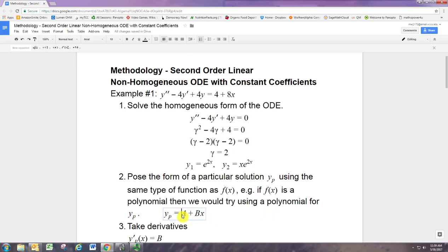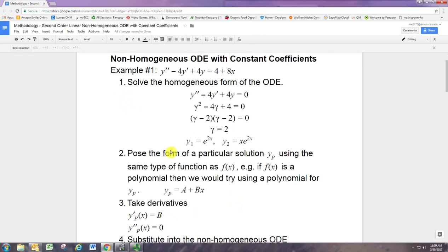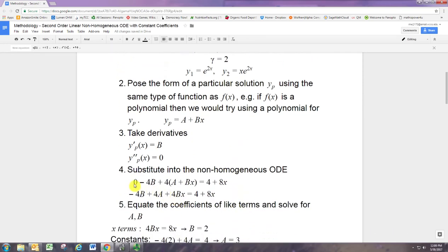Alright, now if we knew what big A and big B were, we'd be done. So that's what we're trying to do, is figure out what the big A and big B are, so that this function goes in here and gives us 4 plus 8x. So we'll take derivatives and do all the work with A and B, and then solve for A and B algebraically. We need two derivatives because this is second order, and they're pretty easy. The first derivative is just B, the second derivative is 0.